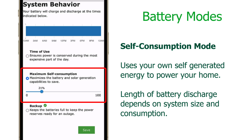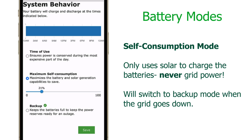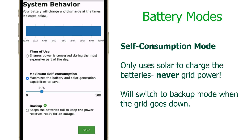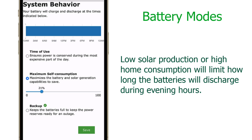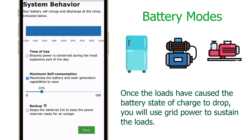Self-consumption mode maximizes self-generated energy from the PV system and the battery bank, reducing reliance on grid power as much as possible depending on PV array size and battery capacity. The most important thing to remember about this mode is that it will only use solar production to charge the battery — it will never use grid power. You should monitor system behavior during periods of low sunlight, since this affects battery charging and how much battery capacity you will have during nighttime hours.